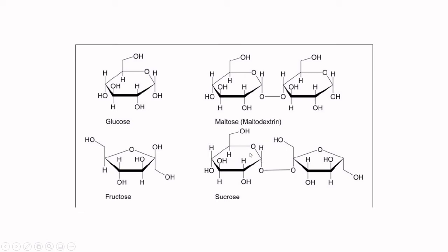Sucrose is our most common table sugar — granulated sugar — and it is a disaccharide where we've got a glucose monomer and a fructose monomer combined together. Sucrose has half the glycemic index of glucose. Glycemic index measures glucose level in the blood. In human physiology, glucose is the preferred sugar — we can take fructose and convert it to acetyl groups that can be used for energy production, but glucose is the preferred energy source for muscle movement, brain function, and energy in pretty much every single cell.